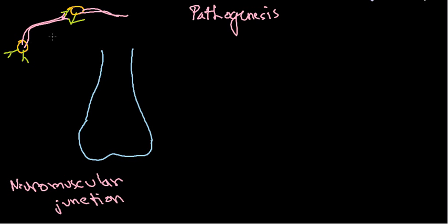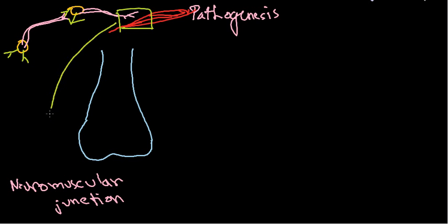At the neuromuscular junction, the axons are coming out and in between we have muscles. The axon terminal meets the muscle here, and this place is termed the neuromuscular junction. This is a very important place because all the signaling and crosstalk between the nervous system and the muscle system occurs here.